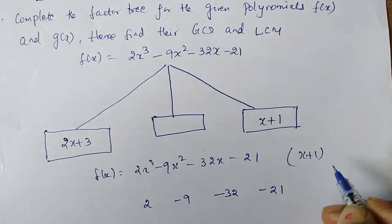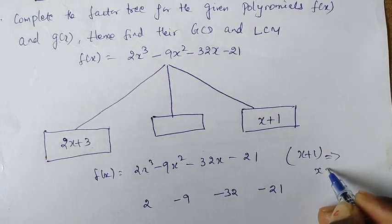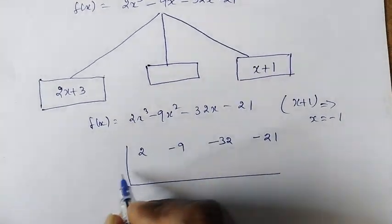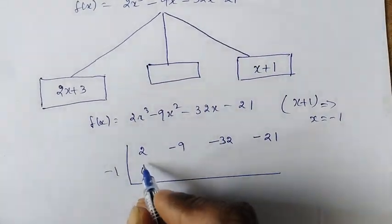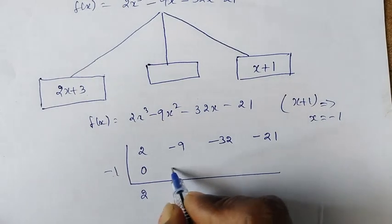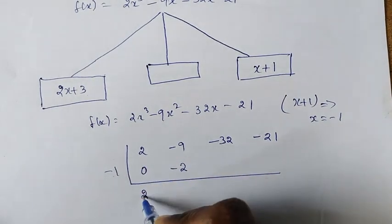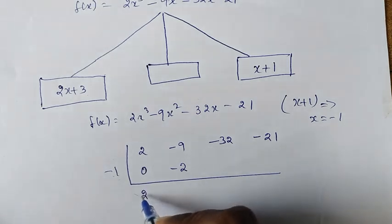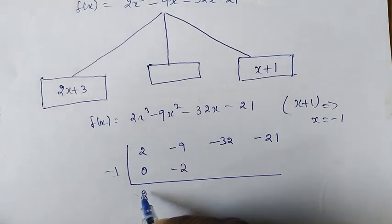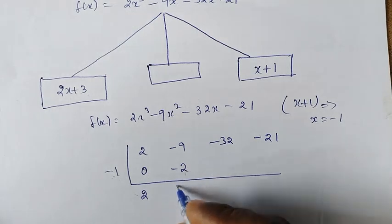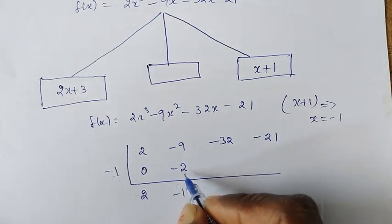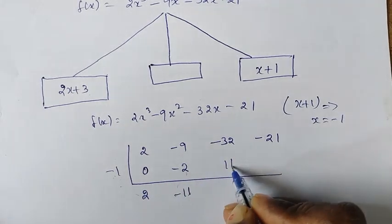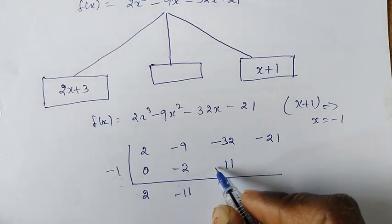x plus 1 is a factor. This implies x equals minus 1. So here we put minus 1. Minus 1 gives 0. We get 2; 2 into minus 1 is minus 2. So 2 minus 0 is 2; 2 into minus 1 is minus 2, giving minus 11.